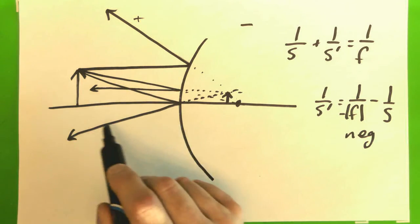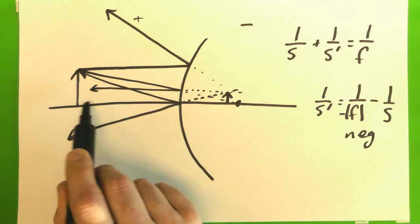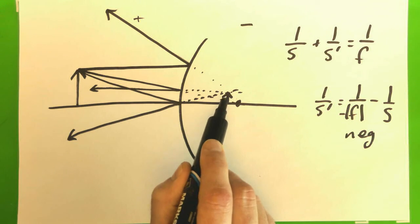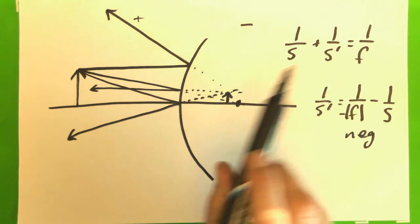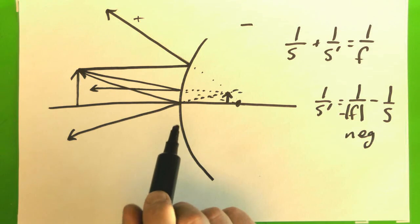So this can check where it ought to be. If I draw this carefully with a ruler, I can find where this would be. But I can also check with just the simple math, keeping straight whether my focal length is positive or negative.